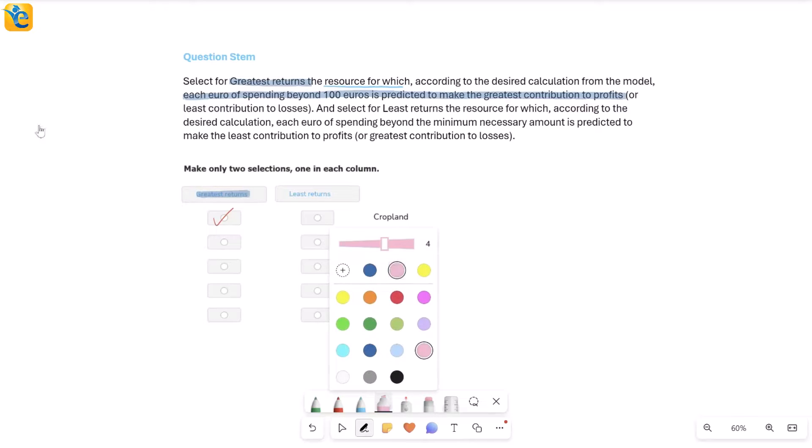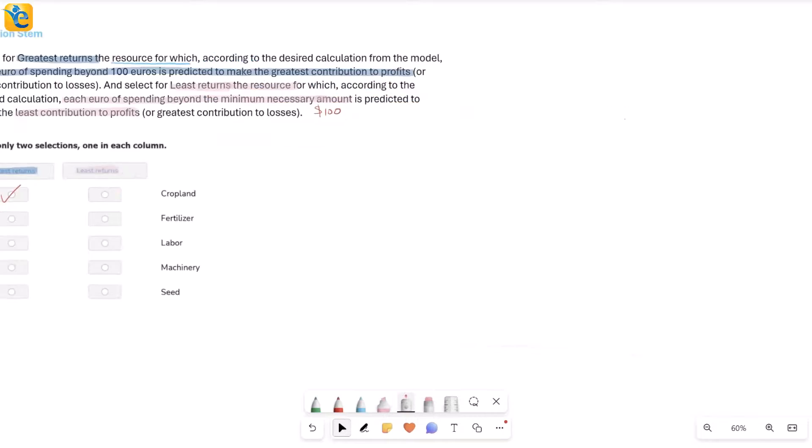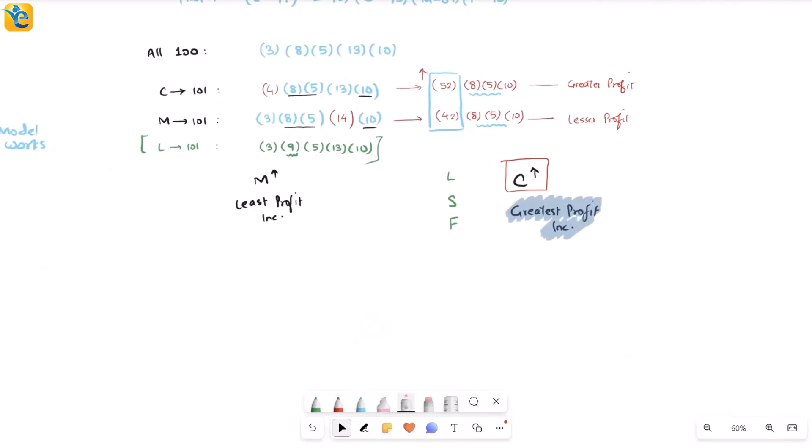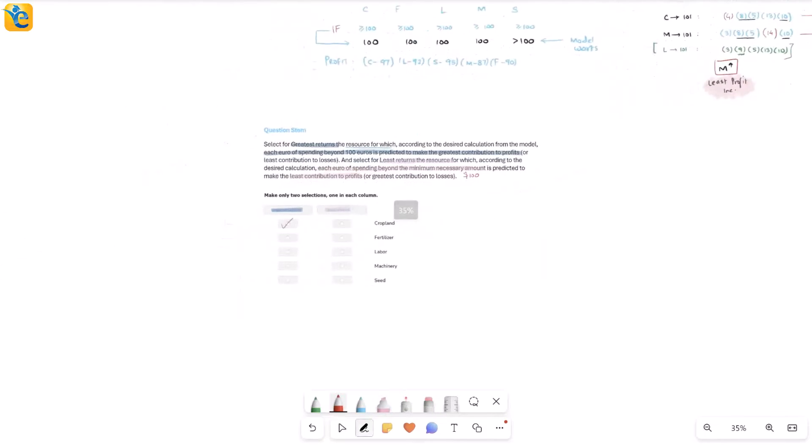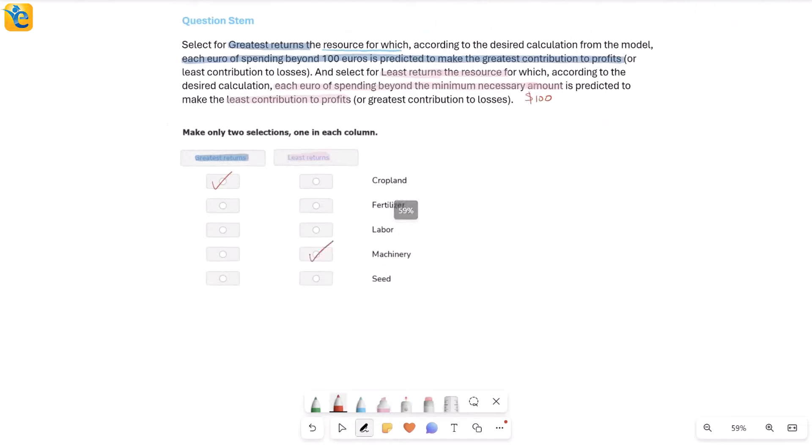Let's now get back to the solution. When you read the question further, it says also select for least returns the resource for which, according to the calculation, each euro of spending beyond the minimum necessary amount—that's still talking about 100 because that is when your model starts working—is predicted to make the least contribution to profits. I actually ended up finding both of these things in my analysis. I found the greatest profit at C and I found the least profit here when I change M. So we'll come here and mark M for this one. We are done.